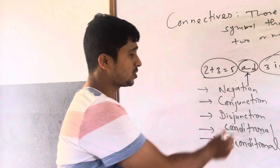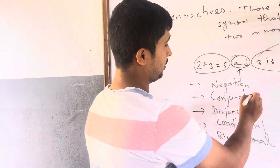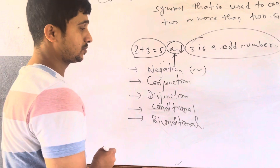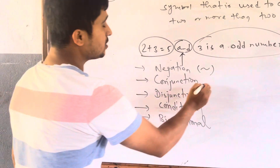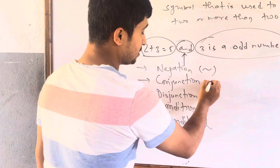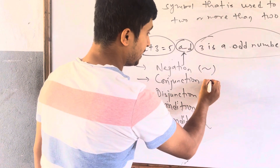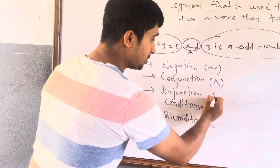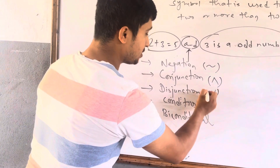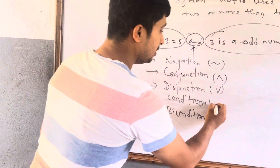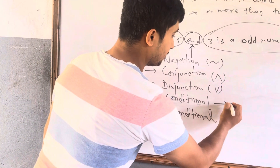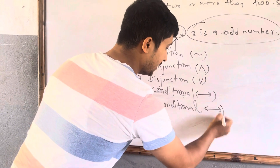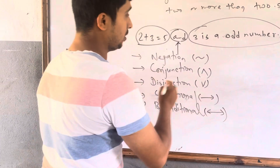Now let's talk about the symbols for them. Negation is symbolized by ¬ (or ~). Conjunction is denoted by ∧. Disjunction is denoted by ∨. Conditional is denoted by →. And biconditional is denoted by ↔.